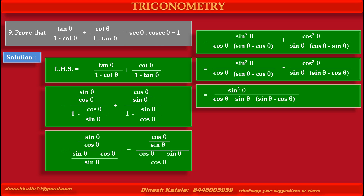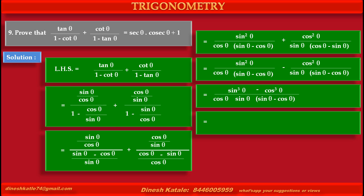To get the LCM, multiply the numerator of the first term by sin θ, so numerator becomes sin cubed θ. Similarly, multiplying the numerator of the second term by cos θ, the second term becomes minus cos cubed θ. The denominator remains cos θ into sin θ into (sin θ minus cos θ).